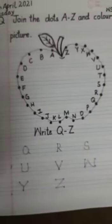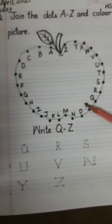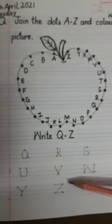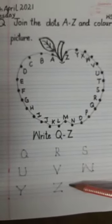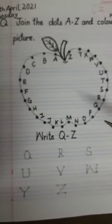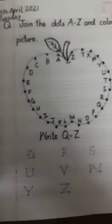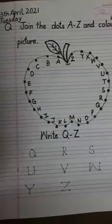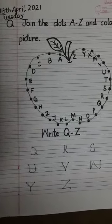Do your worksheet neat and clean, children. Join the dots properly. Write Q to Z correctly with right formation. Color the picture. And send your worksheet back in the group. Thank you, children. Have a nice day, warriors. Bye-bye.